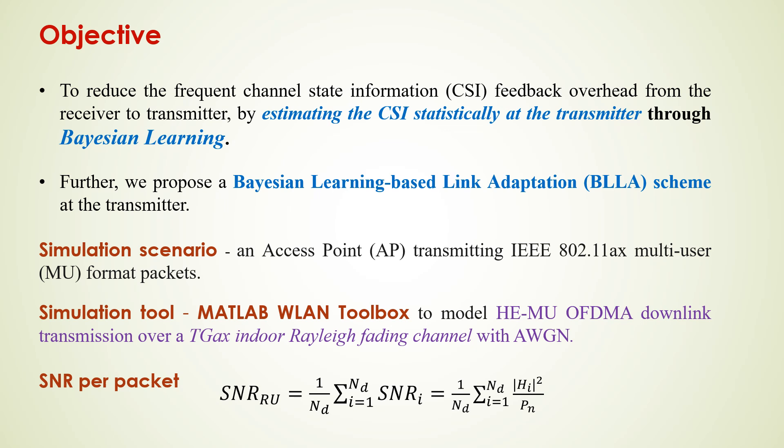We consider a simulation scenario where an access point is transmitting 802.11ax multi-user packet format. We have used a reliable link level simulator, the MATLAB WLAN toolbox, to model HE-MU OFDMA downlink transmission over a TGax indoor fading channel with AWGN. The channel model is considered as channel model D, that is a typical office enterprise environment.